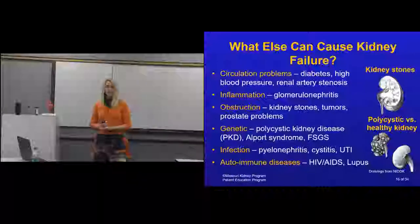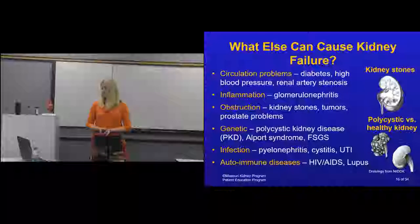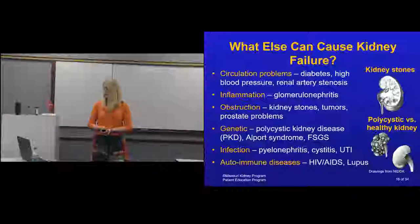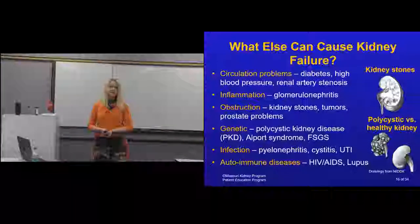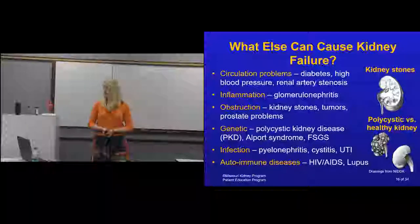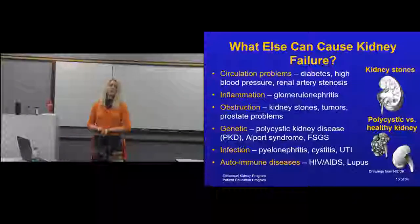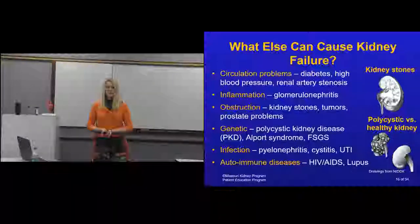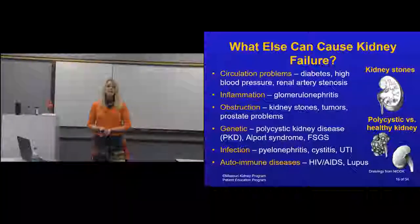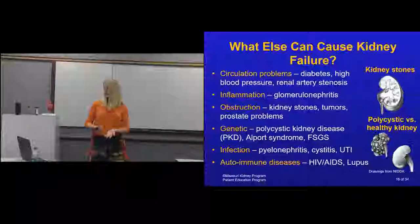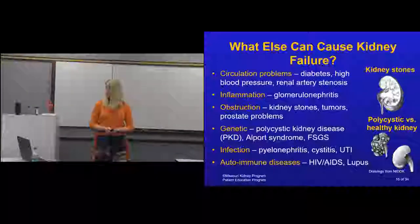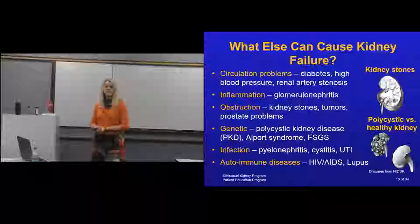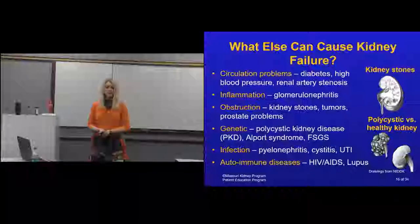Genetic causes of kidney disease include polycystic kidney disease or Alport syndrome. FSGS — focal segmental glomerulosclerosis — is also diagnosed by biopsy. Frequent urinary tract infections or kidney infections can cause permanent kidney damage, so get those symptoms treated promptly. Autoimmune diseases such as HIV and AIDS can cause kidney disease, and unfortunately some medications used to treat HIV and AIDS can also cause kidney problems, requiring close monitoring. Lupus is another autoimmune disease — patients may have joint pains, chest pains, a facial rash, and protein in the urine, also diagnosed by biopsy.